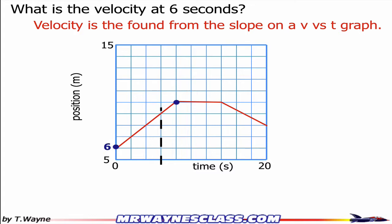So the rise starts at 6, and it goes up to the other point, which is at 10. And then the run starts at 0 and goes over to this point, which is at 8.